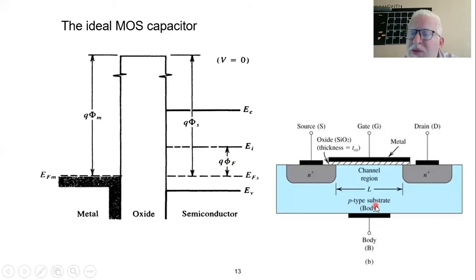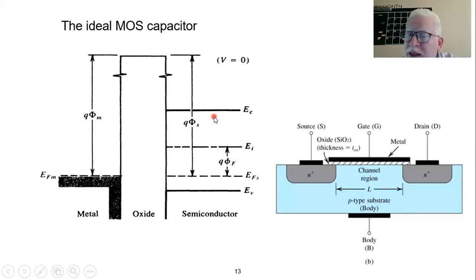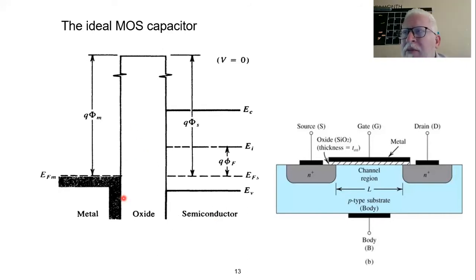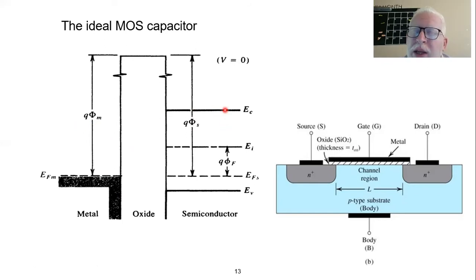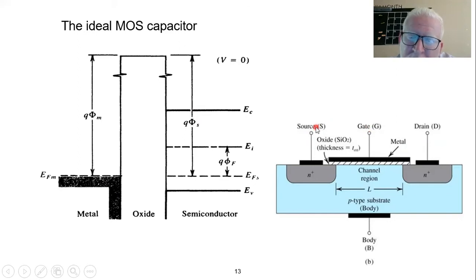Here we are dealing with what is called a p-channel structure, so the substrate is p-type, which is reflected in the band diagram — EFS is closer to the valence band rather than the conduction band, making it a p-type substrate. The oxide is represented as an empty gap because the energy gap for an oxide is very large and we are not interested in it within our energy band diagram. This is what happens for a MOS junction energy band diagram under thermodynamic equilibrium, meaning no external voltage is applied to the gate, source, or drain.